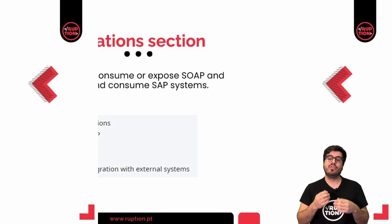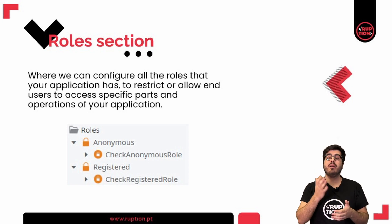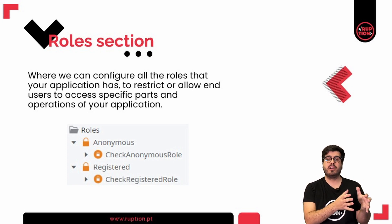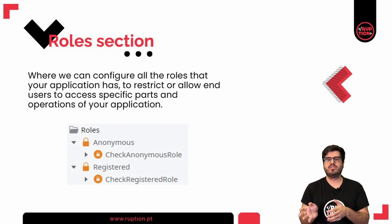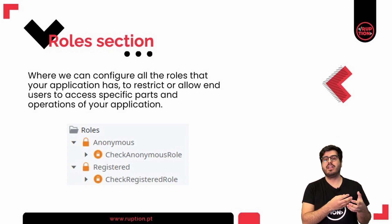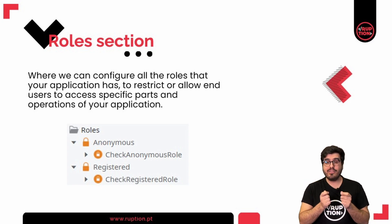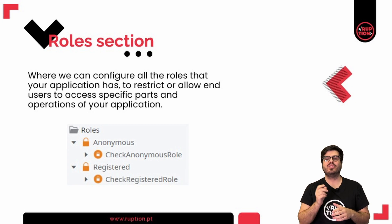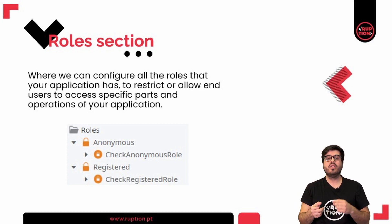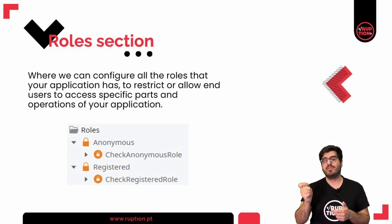Below integrations, we can see the Roles section. This is where we can configure all the roles that your application needs to restrict or allow end users to access specific parts and operations of your application. OutSystems by default has two system roles: Anonymous and Registered — the difference between someone who is authenticated or not via login. You always want to protect your application, so this is a key functionality you must use. Besides these two roles, you can also define your own roles to manage your application. After you create your roles, you can check if the user has that role with built-in functions, or even apply the role to your screen to prevent someone without that specific role from accessing it.